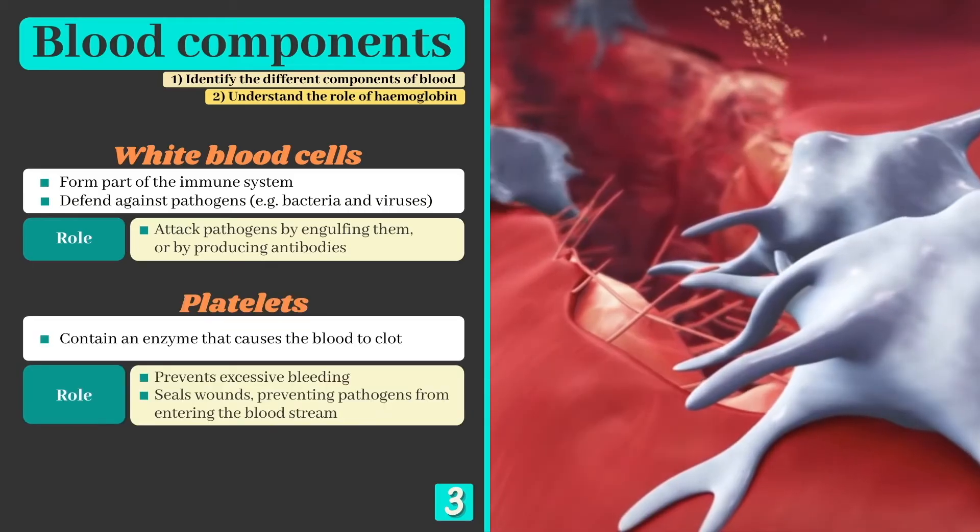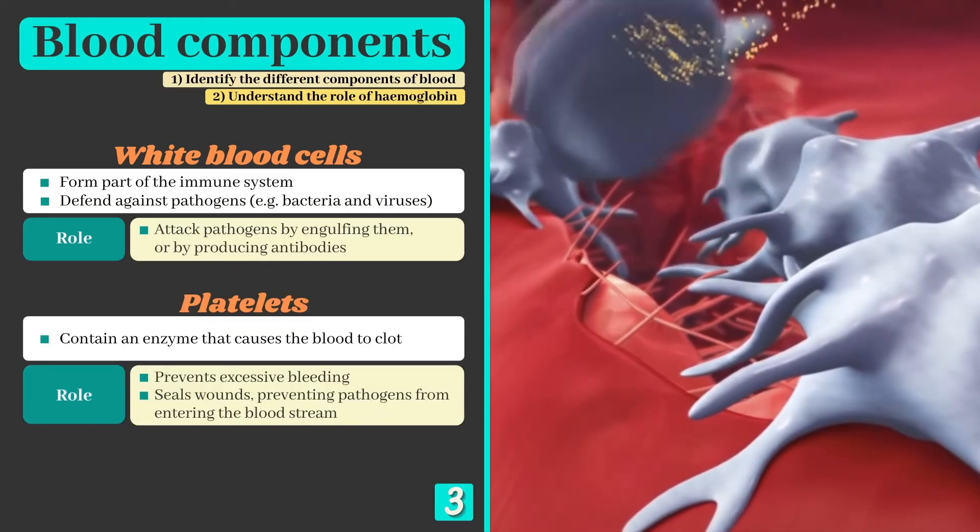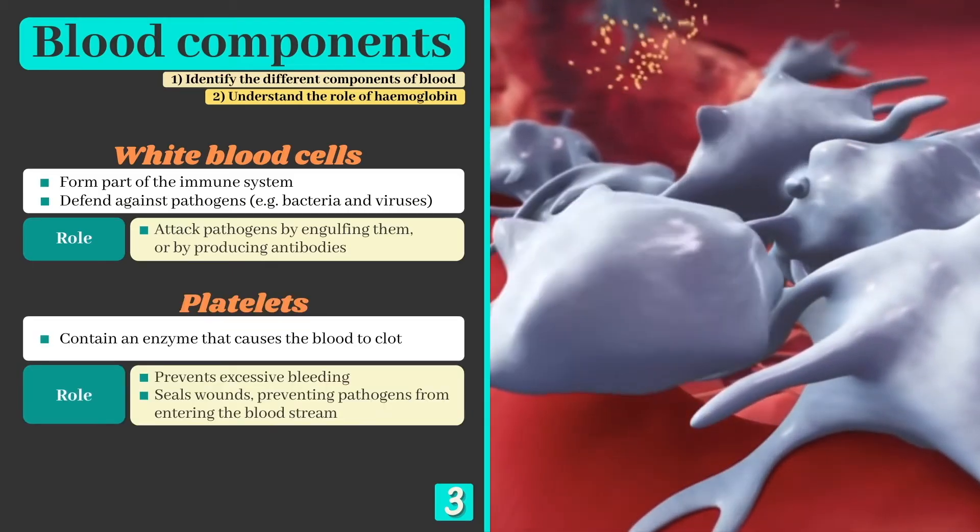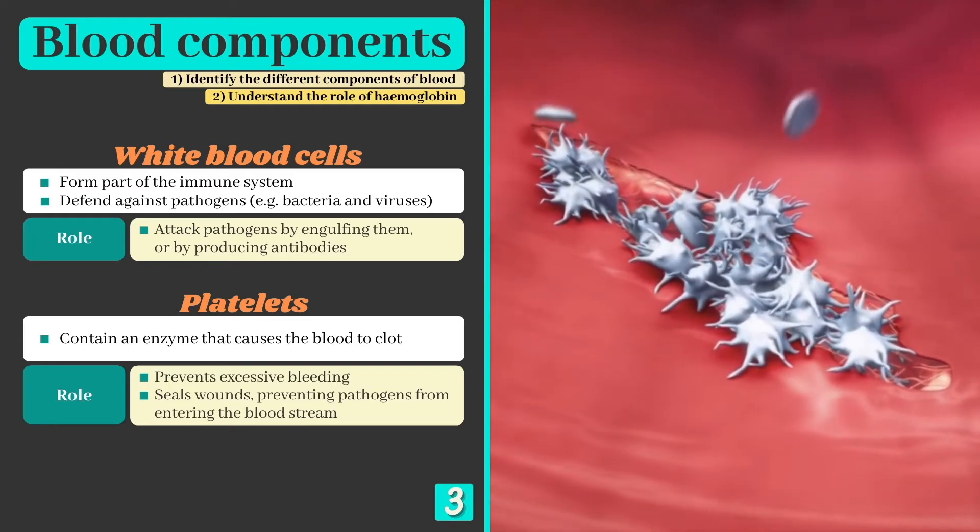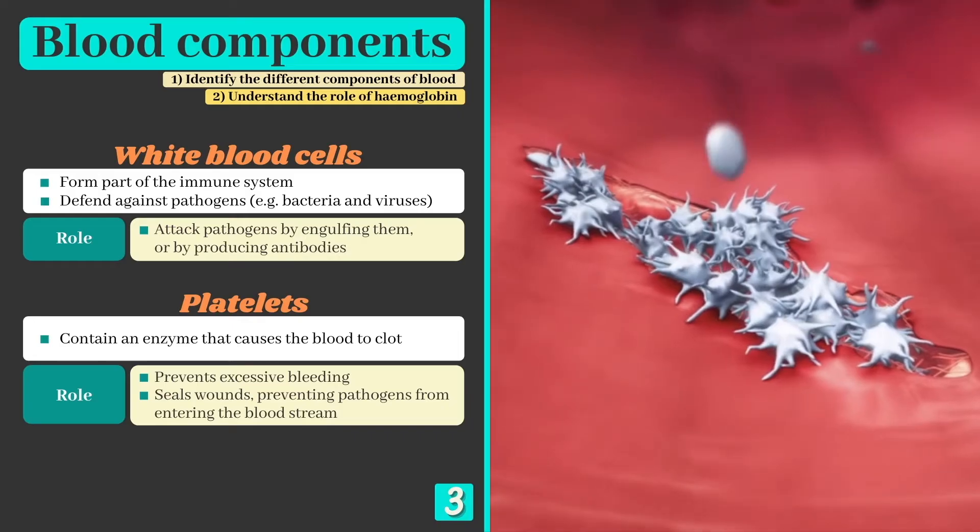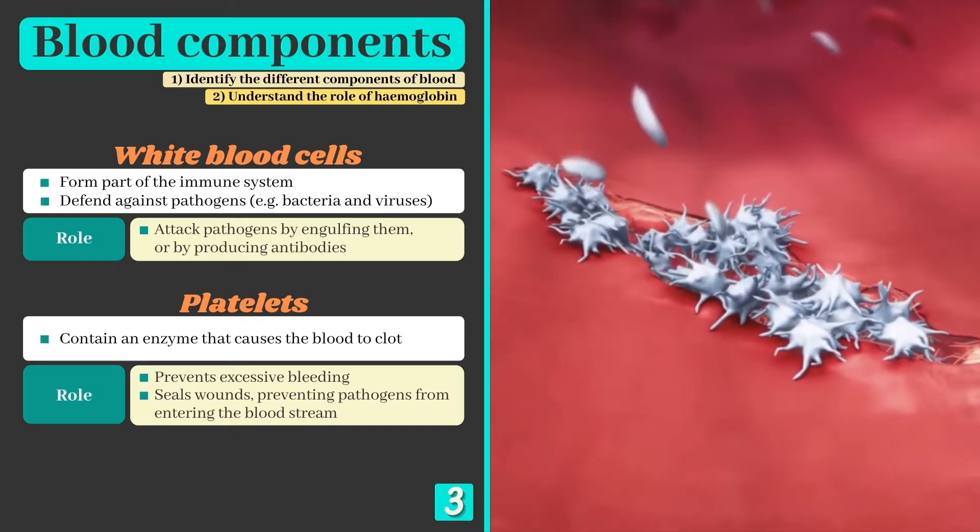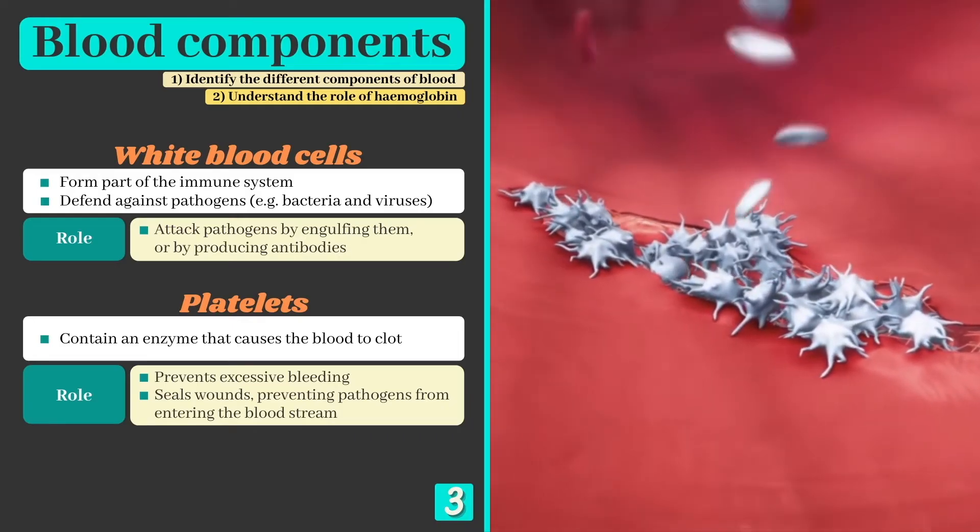Finally, we have the platelets. They contain an enzyme that causes the blood to clot whenever a blood vessel is damaged. If it weren't for the platelets, there would be nothing to stop the cut or graze from bleeding and the wound would stay open, making it easy for pathogens to enter the bloodstream.